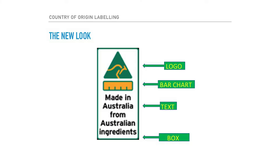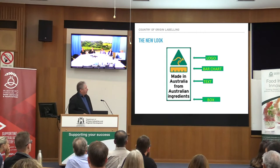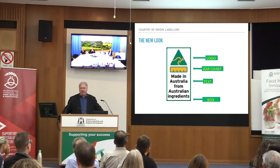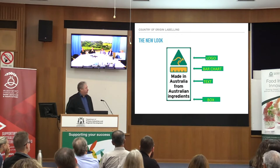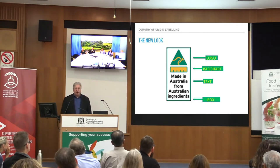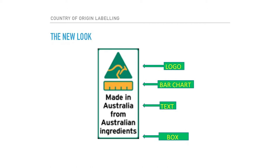Let's look at some basic concepts. This is the new look — this is what the labels are going to look like. There's a logo, a bar chart, mandatory text, all in a box. Not all claims will have all of these elements, but that's the basic look. The logo signifies manufacturing jobs — the 'made in' part — meaning people in Australia are substantially transforming products here. The bar chart talks about Australian content — this is the farm bit — about how much buying this product may support Australian farmers. The text is now prescribed, and it's in a box because this has got to stand out.